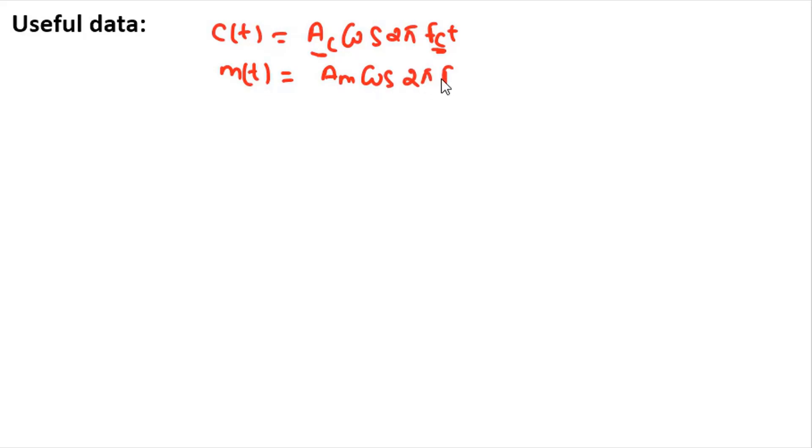...2π fm t, where Am is the amplitude of the message signal and fm is the frequency of the message signal. So when this carrier is amplitude modulated by this message signal, then you will get amplitude modulated signal s(t) as...